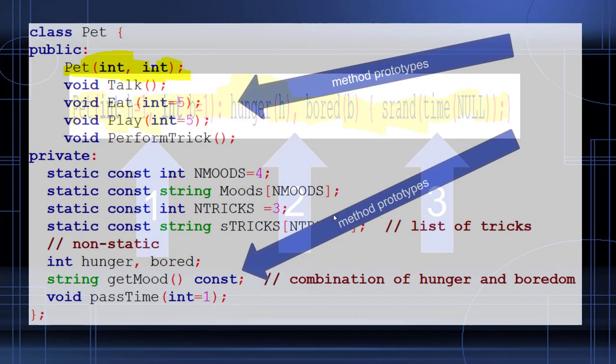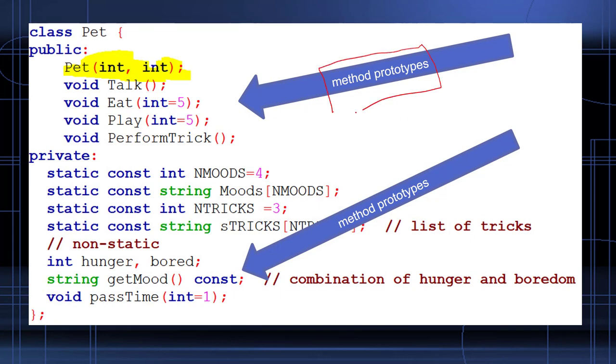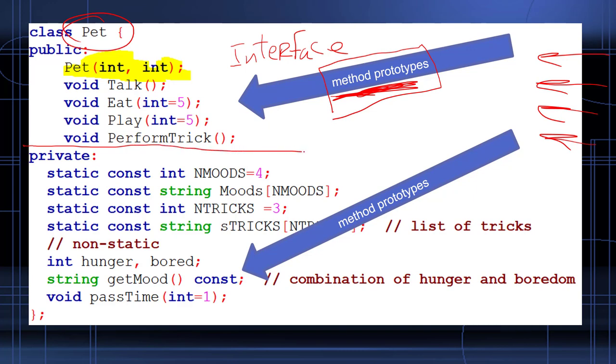Just identifying the parts once again. These are our methods, there are public interface. That is, programmers from the outside world when they want to create a pet they will use these methods to control our pet. The private methods are not supposed to touch, that's for us, but they're still called prototypes.